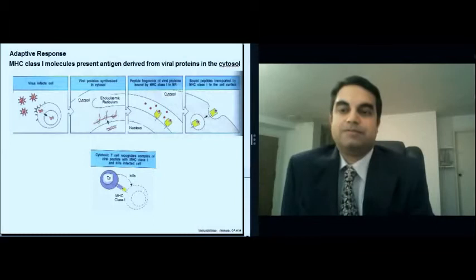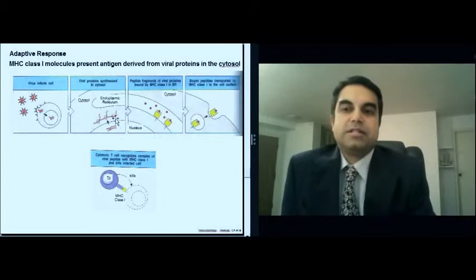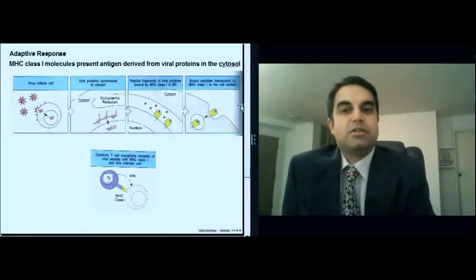The virus will enter the cell and will start synthesizing proteins in the cytosol. Now, these peptide fragments are bound then to MHC class 1 molecules in the endoplasmic reticulum, where eventually they're expressed on the cell surface. And the cytotoxic T cell can then recognize this MHC class 1 molecule and target this cell for destruction.